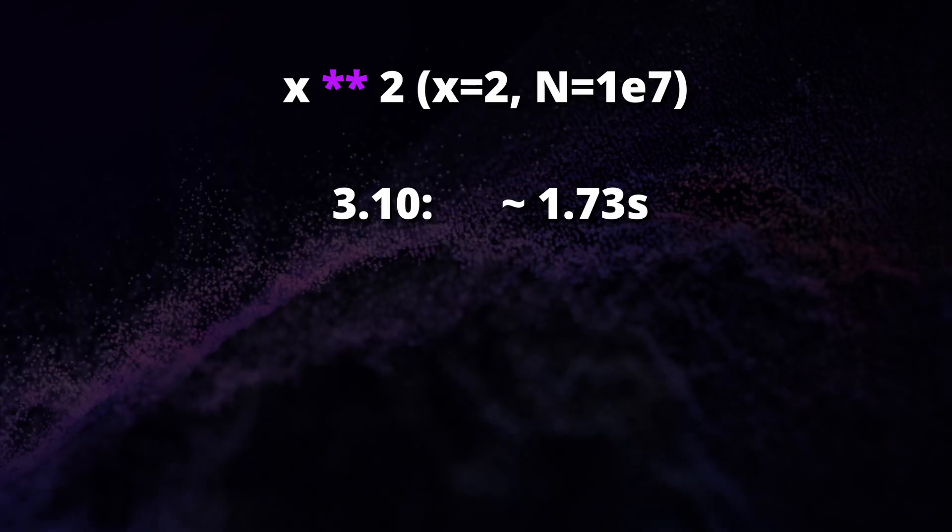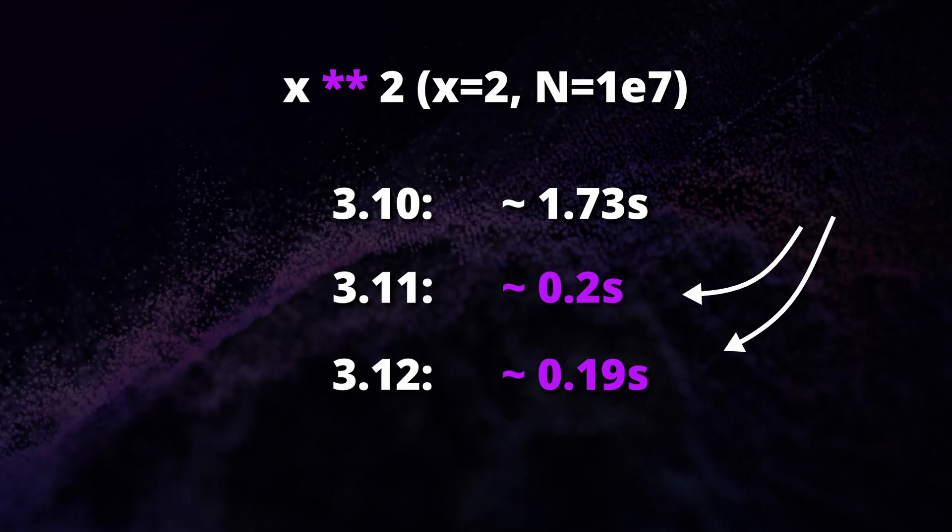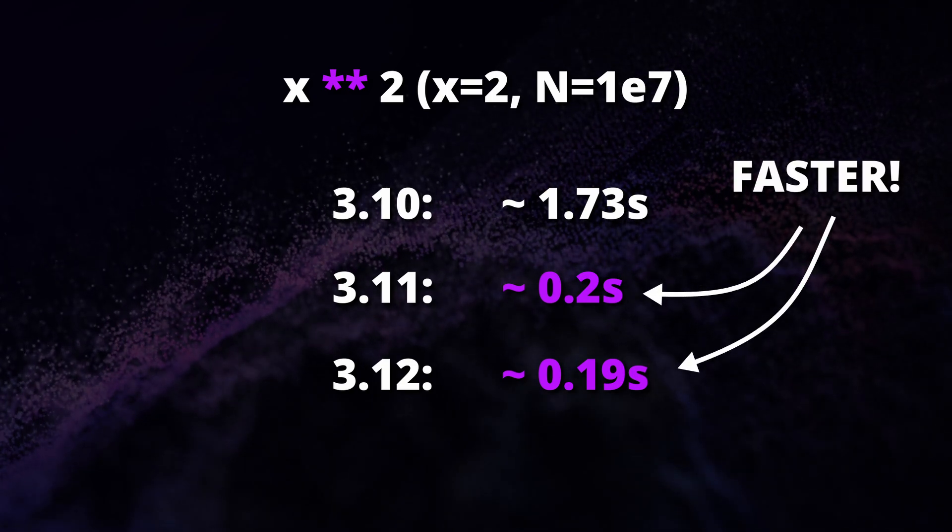In Python versions 3.11 and 3.12, this problem isn't there anymore. And that's because the core logic changed so that we multiply out the elements directly when we have a small exponent, which means that x squared is just as fast as x times x.